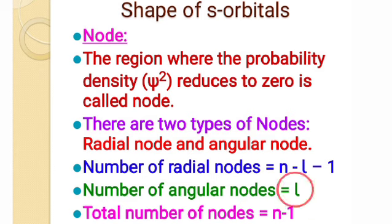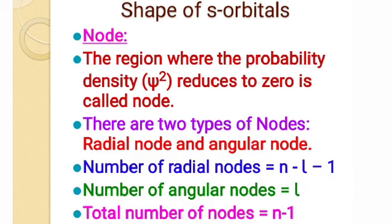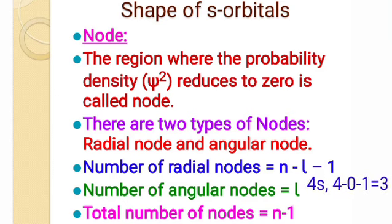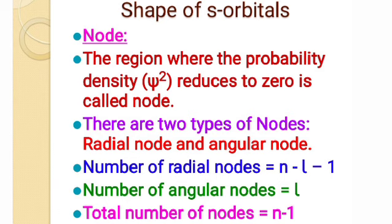Angular nodes depend on the value of l. For s-orbital, there are no angular nodes because the l-value is zero. The number of radial nodes is equal to n - l - 1. For example, for 4s-orbital, l = 0, so radial nodes = 4 - 0 - 1 = 3. For 3s-orbital there are two radial nodes. For p-orbital, there is one angular node because l = 1. For d-orbital, there are two angular nodes because l = 2.